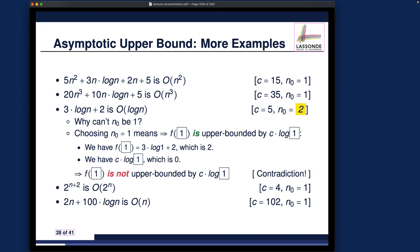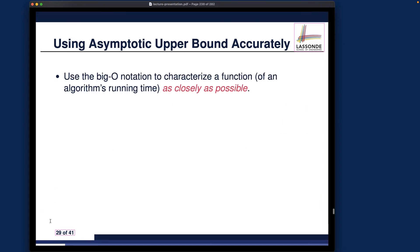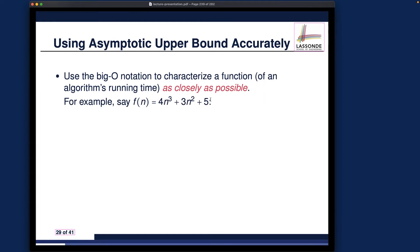I would like to make two more remarks — two bullet points to go over one at a time. Whenever you use the Big O notation to characterize a function, for example an algorithm's running time, you want to make it as closely accurate as possible. Even though a less accurate bound may not be incorrect, it's not very useful. That's the bottom line.